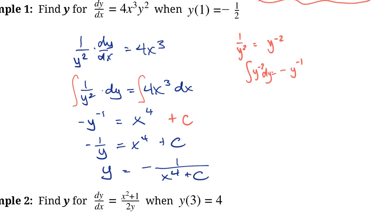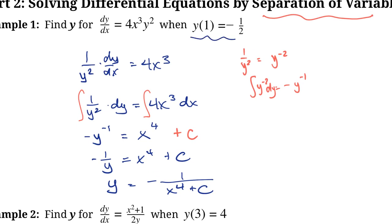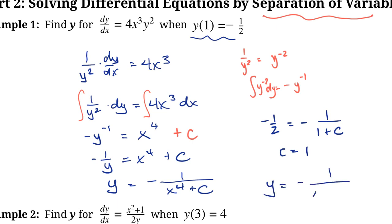The question tells us y at 1 equals negative one-half, so we can find the particular solution by solving for c. When y is negative one-half and x is 1, just by inspection the denominator must be negative 2, so c must be 1. The particular solution to this differential equation is y equals 1 over (x to the fourth plus 1).